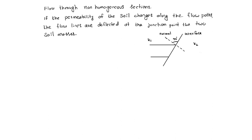Let us have this flow line deflected like this. Let us take this angle as alpha 1 and this angle as alpha 2. This is one flow line, and this is also a flow line — both deflected like that.